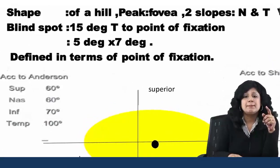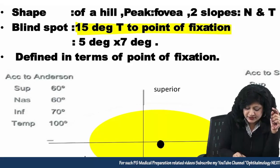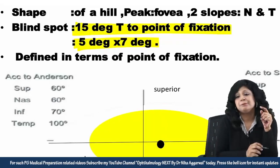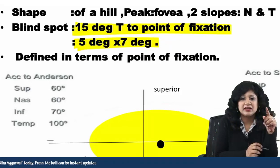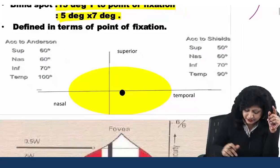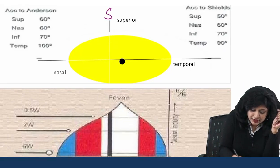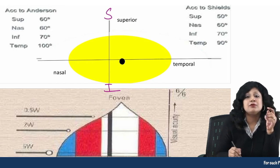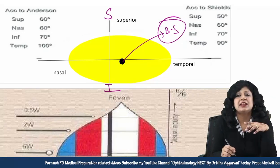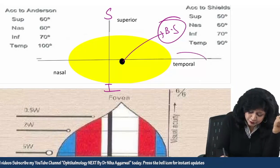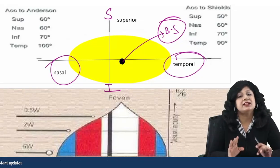A blind spot will always lie in the temporal field. Don't get confused between the retinal fibers and the fields — the optic disc is lying in the nasal retina and the field is lying on the temporal side. The blind spot is actually 15 degrees temporal to the point of fixation and the size is 5 to 7 degrees — defined as 5 by 10 degrees relative to the fixation point. If I look at the visual field, I will have four quadrants: superior, inferior, and whichever side the blind spot is lying, that will be the temporal side.